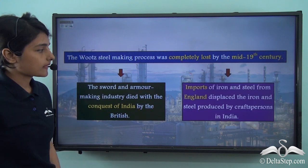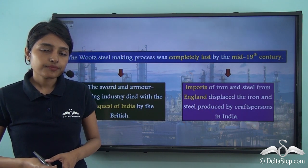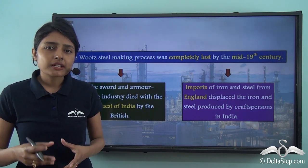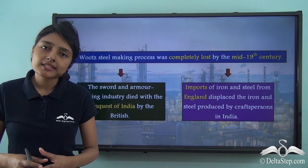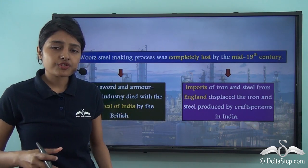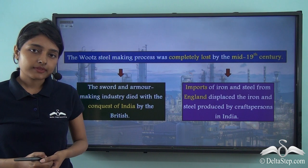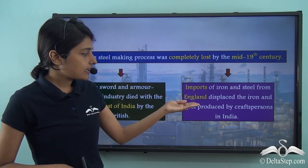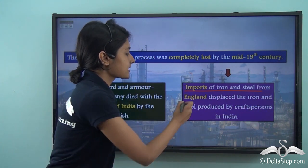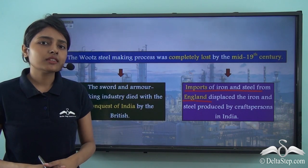Imports of iron and steel from England displaced the iron and steel produced by craftspersons in India. The 19th century was the time of technological inventions thanks to the industrial revolution in England, and the iron and steel industry gained great importance there. From this point of time, iron and steel were being imported from England, displacing the iron and steel produced by Indian craftspersons. These were the two primary reasons why the production of wootz steel lost its importance by the mid-19th century.